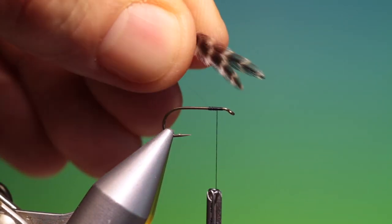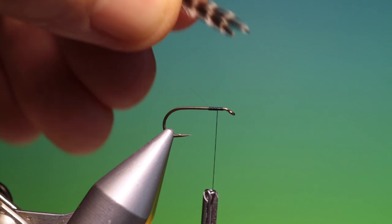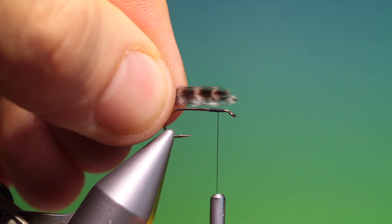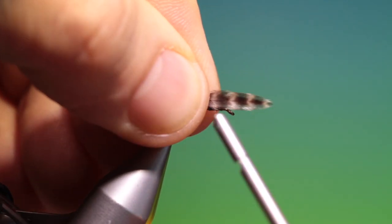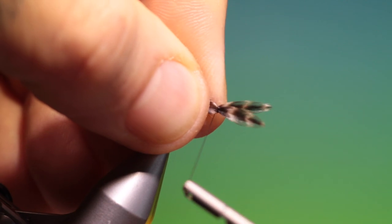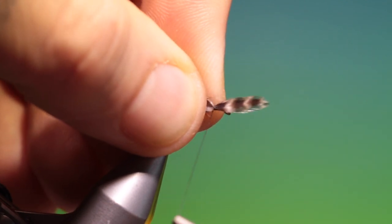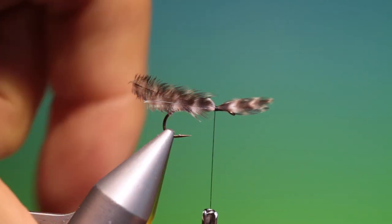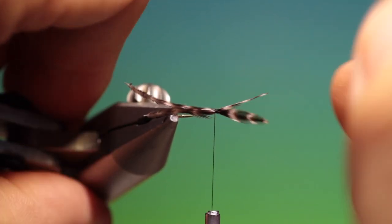Then we need two grizzle hackle hen hackle feathers. These want to be as long as the hook shank or thereabouts. We just want to tack these in with two or three turns. We'll just check that they're right, those are good.